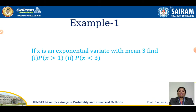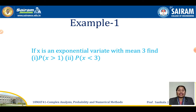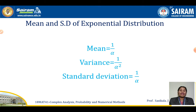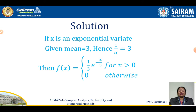Now we go to an example. If x is an exponential variate with mean 3, find: (1) P(X > 1) and (2) P(X < 3). Since x is an exponential variate, f(x) = alpha times e to the power minus alpha x for x greater than 0. Given mean = 3, and since mean = 1 by alpha, we have 1 by alpha = 3, so alpha = 1 by 3.